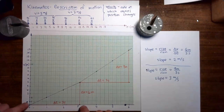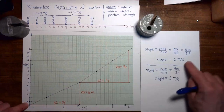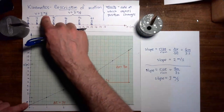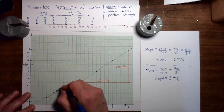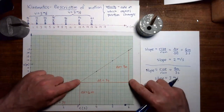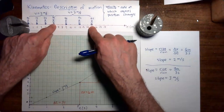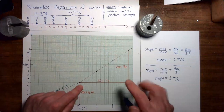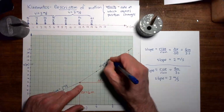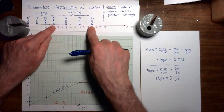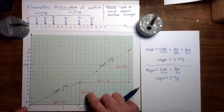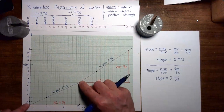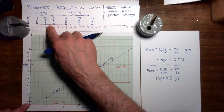Let's sum up. In the part of the graph representing the first 3 seconds of the person's motion, the slope is 2 meters per second — exactly the person's velocity during that interval. And in the portion representing the last 3 seconds of motion, the slope is 3 meters per second — the same as the velocity of the person in that last 3 seconds. So what we have learned is that the slope of the position versus time plot is actually equal to the velocity of the moving object.